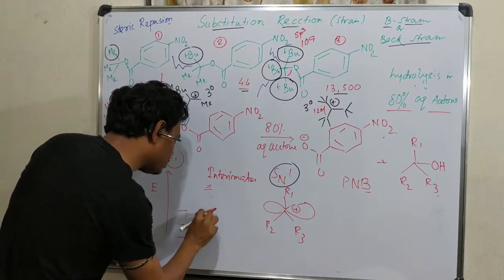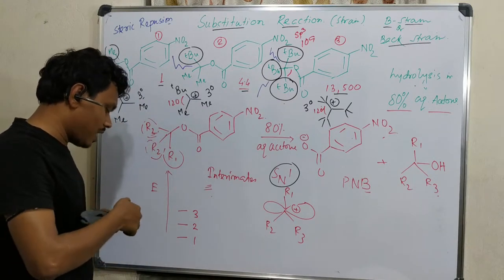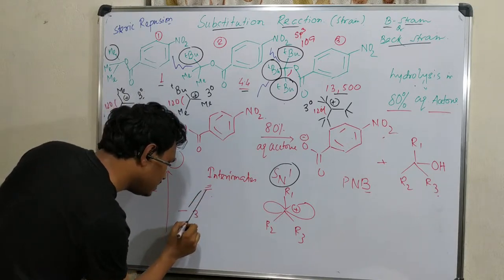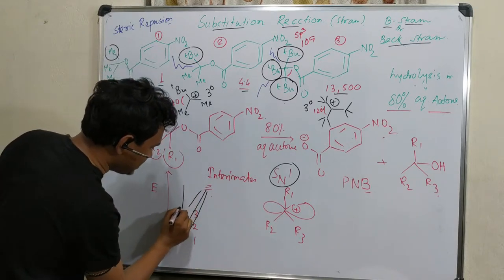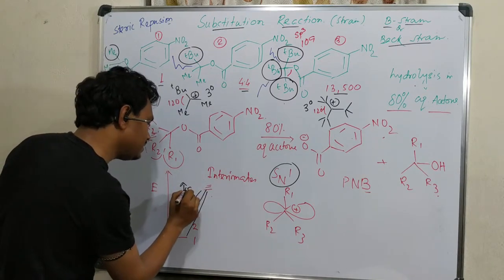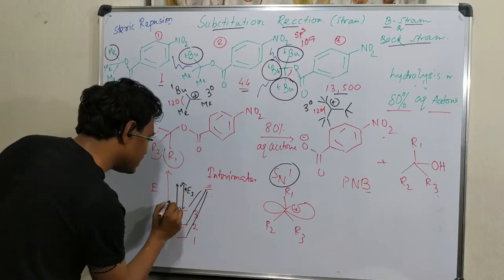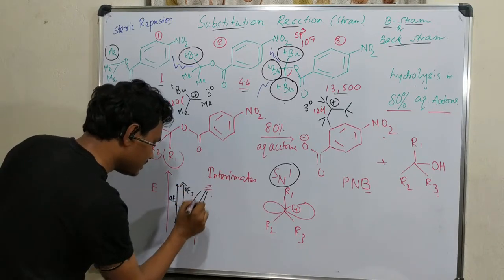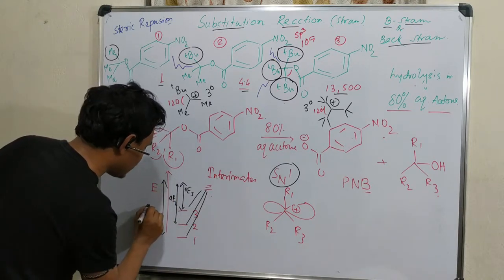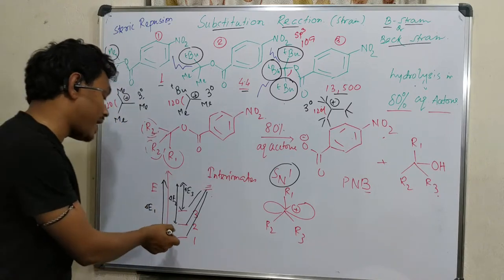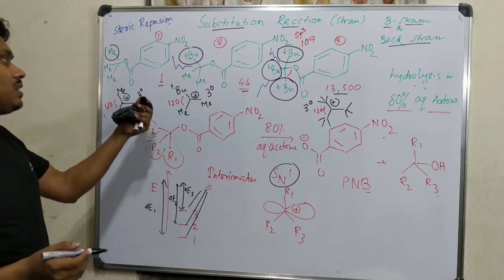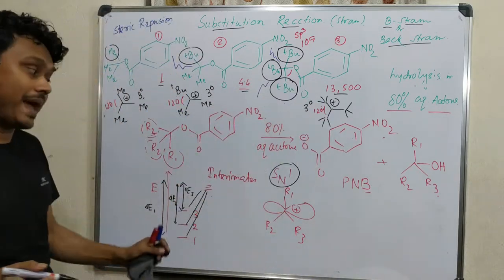From the conversion of this 1 to 2 to 3, the corresponding energy of activation in this case is, suppose, delta E3. This is, in case of 2, let's consider delta E2. And this, let's consider here delta E1. So here you can see the energy of activation value is higher here. So automatically rate will be slower. But here, this. So this factor is called back strain.